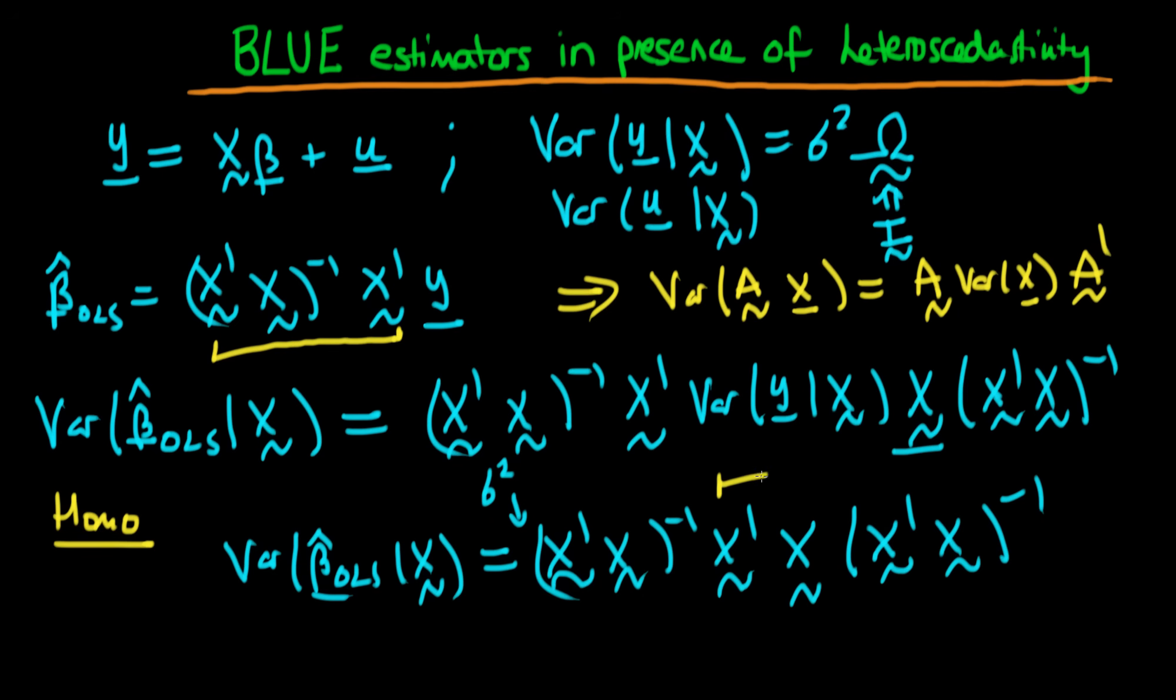And notice here that I've got X prime X times its inverse X prime X to the power minus 1, so they're just going to cancel, and we're going to be left with the variance of beta hat OLS is equal to sigma squared times X prime X to the power minus 1. And notice that this was under the assumption that we have homoscedastic errors.